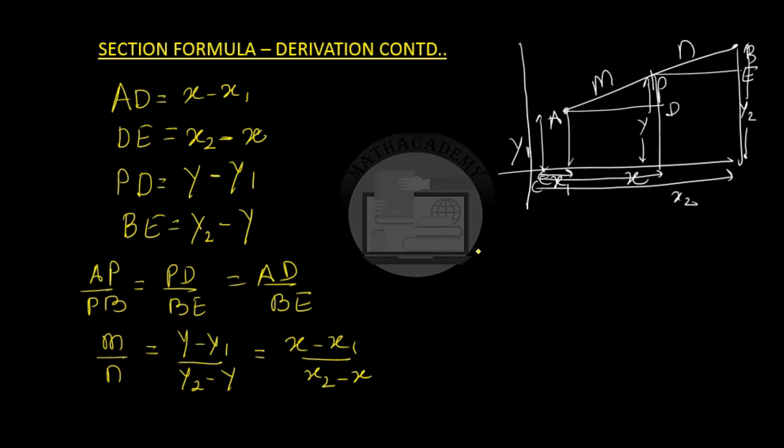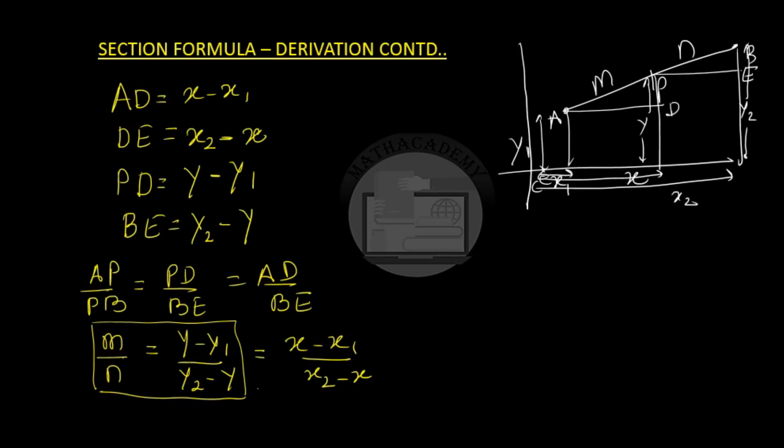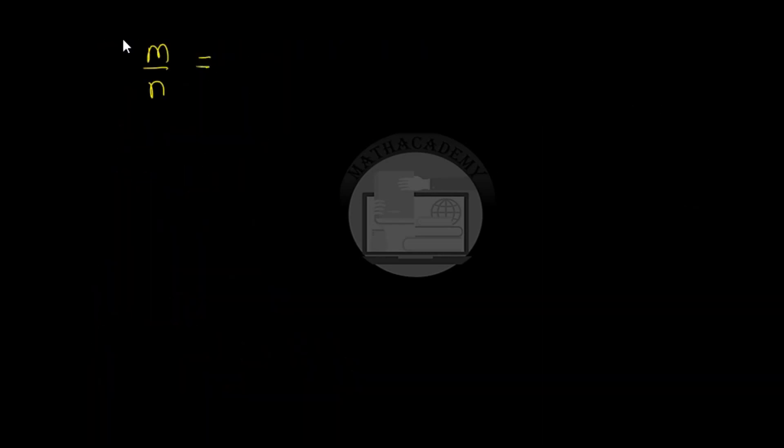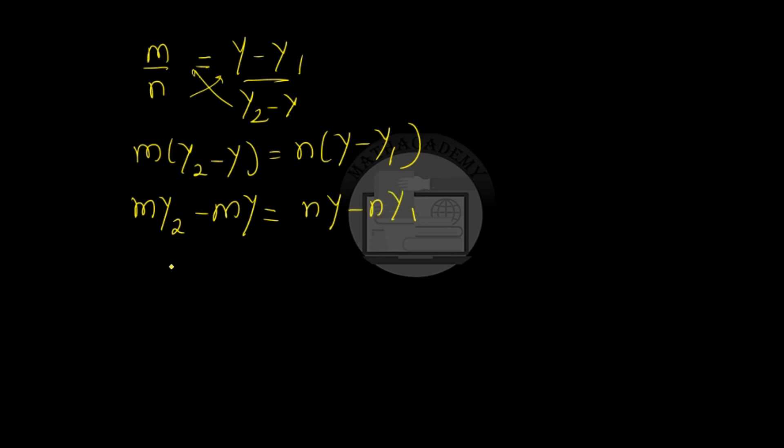So we will be taking this equality first. Now, m over n is equal to y minus y1 over y2 minus y. Our aim is to find the value of y. So let us cross multiply. We get m times y2 minus y is equal to n times y minus y1. So my2 minus my is equal to ny minus ny1.